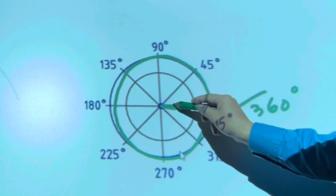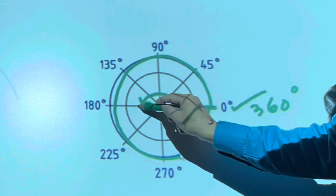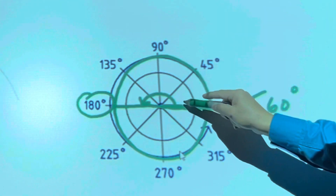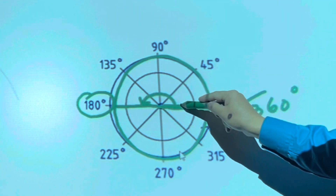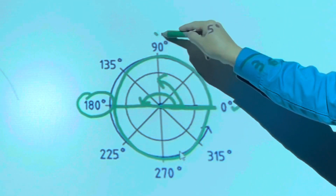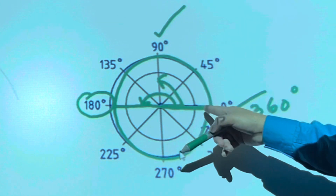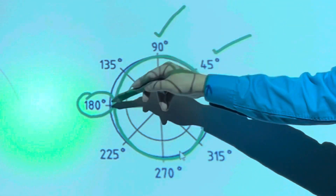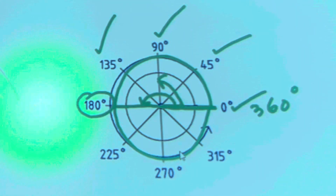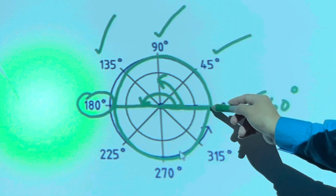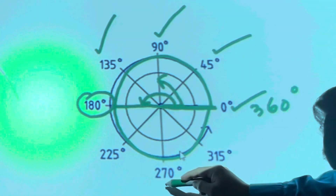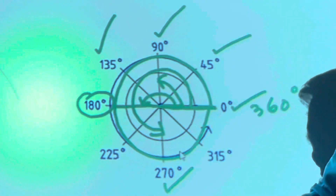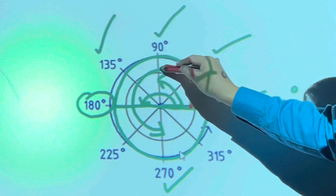A half rotation is 180 degrees. Half of 180, considering the top part, brings you to 90 degrees. Half of that — between zero and 90 — is 45 degrees. Between 90 and 180 gives you 135 degrees. A three-fourths rotation gives you 270 degrees.